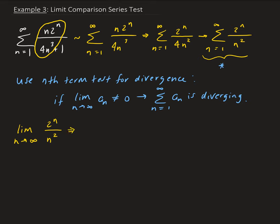Now, because 2 to the n is increasing at a much faster rate than n squared, overall the limit of this is going to go to infinity.